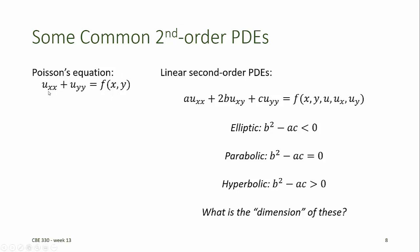The way it's written here, a and c are both equal to 1, and 2b is equal to 0. Therefore, b² - ac is less than 0. A special case of Poisson's equation is the homogeneous form, which we call Laplace's equation.